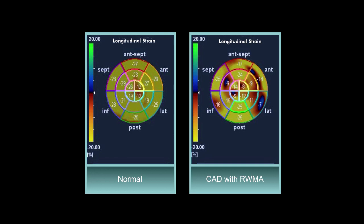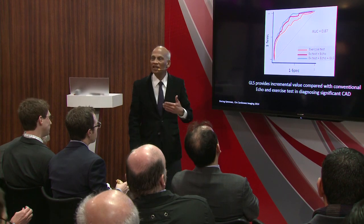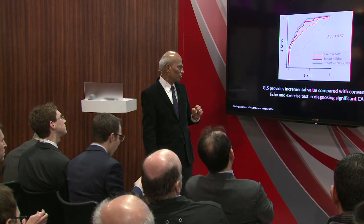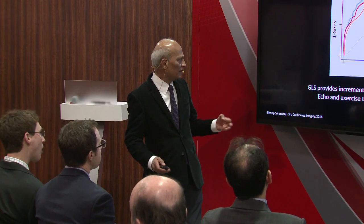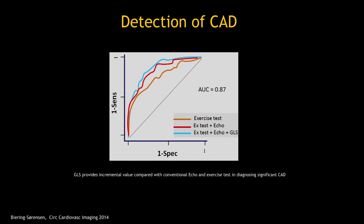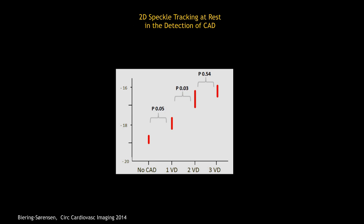Another patient shows multiple abnormal regions — a patient with multi-vessel disease. Beyond recognition of regional contractile abnormality, we also get global EF information. In the detection of coronary artery disease in patients with anginal or chest pain symptoms, global longitudinal strain compared to exercise test with conventional echo provides the maximum sensitivity and specificity on the receiver operator curve, correlated with coronary angiography.